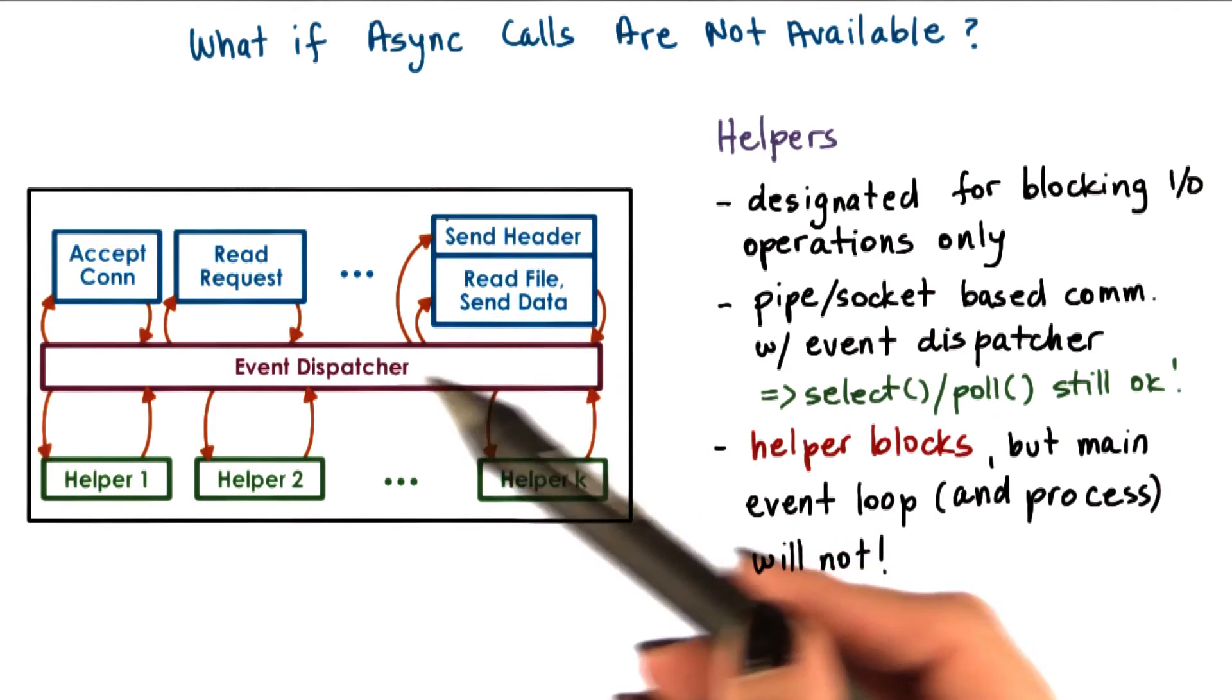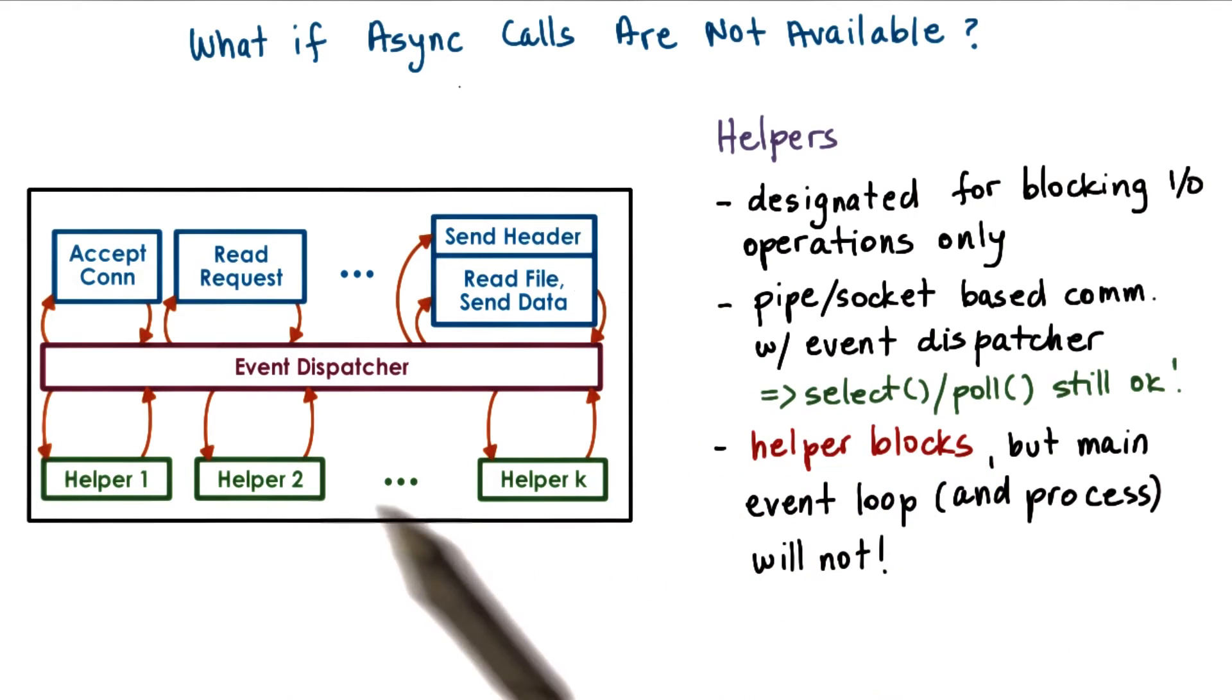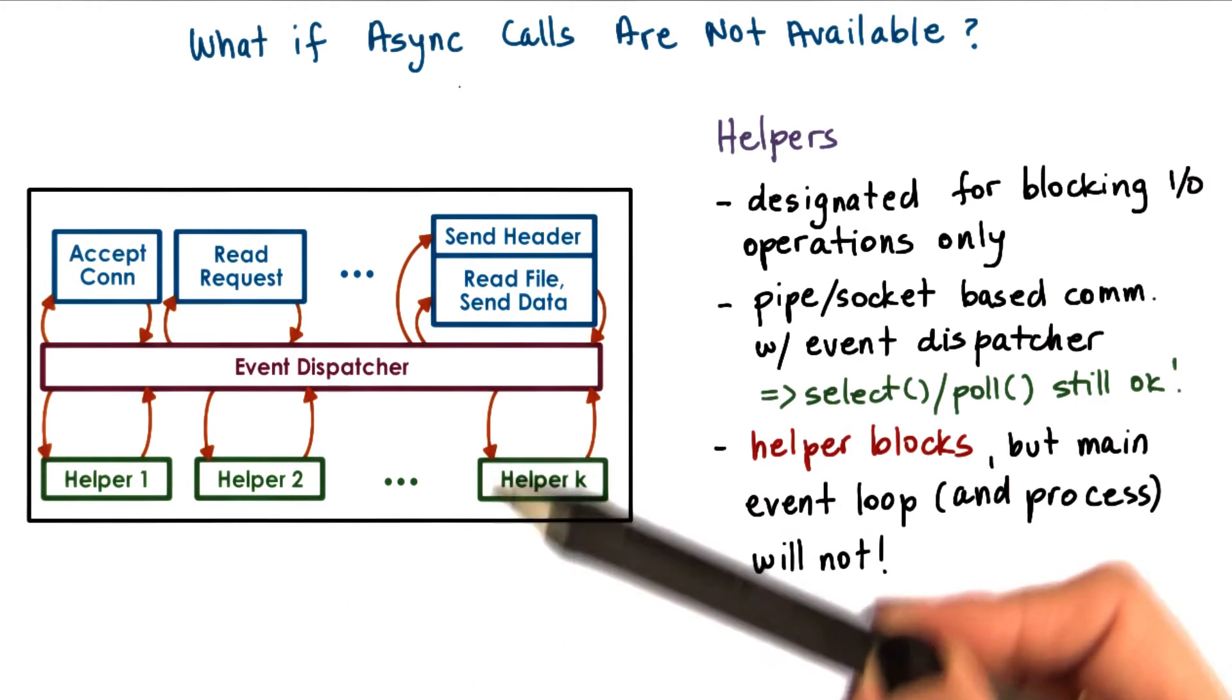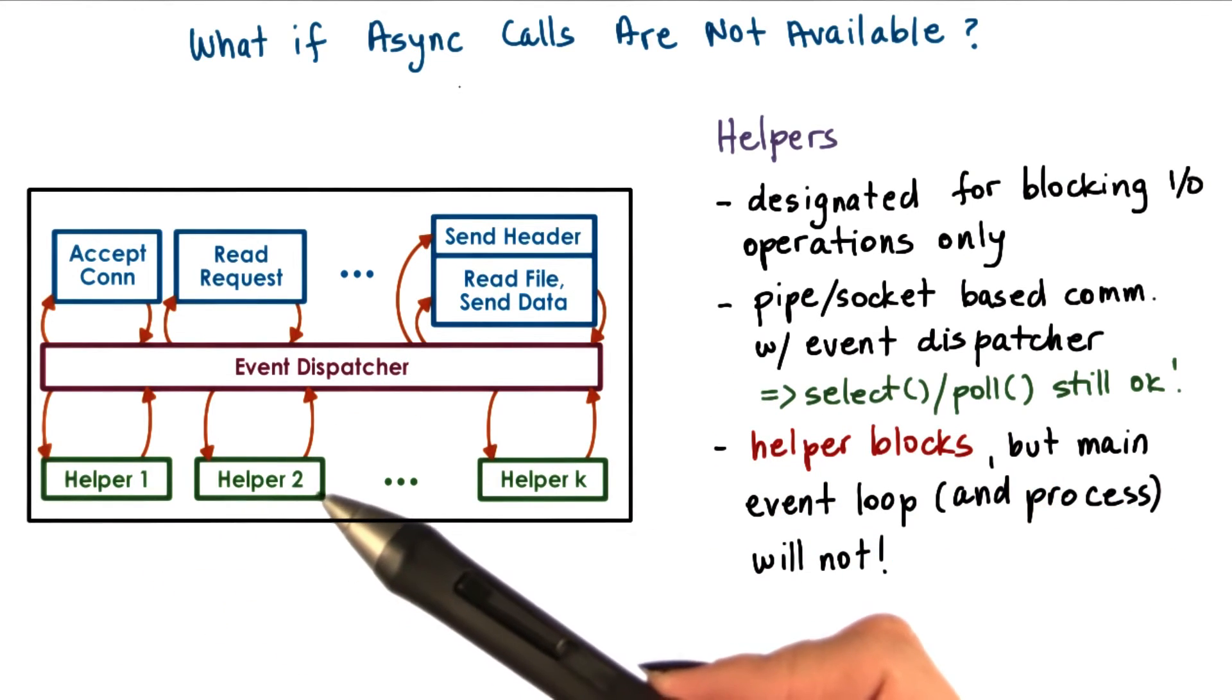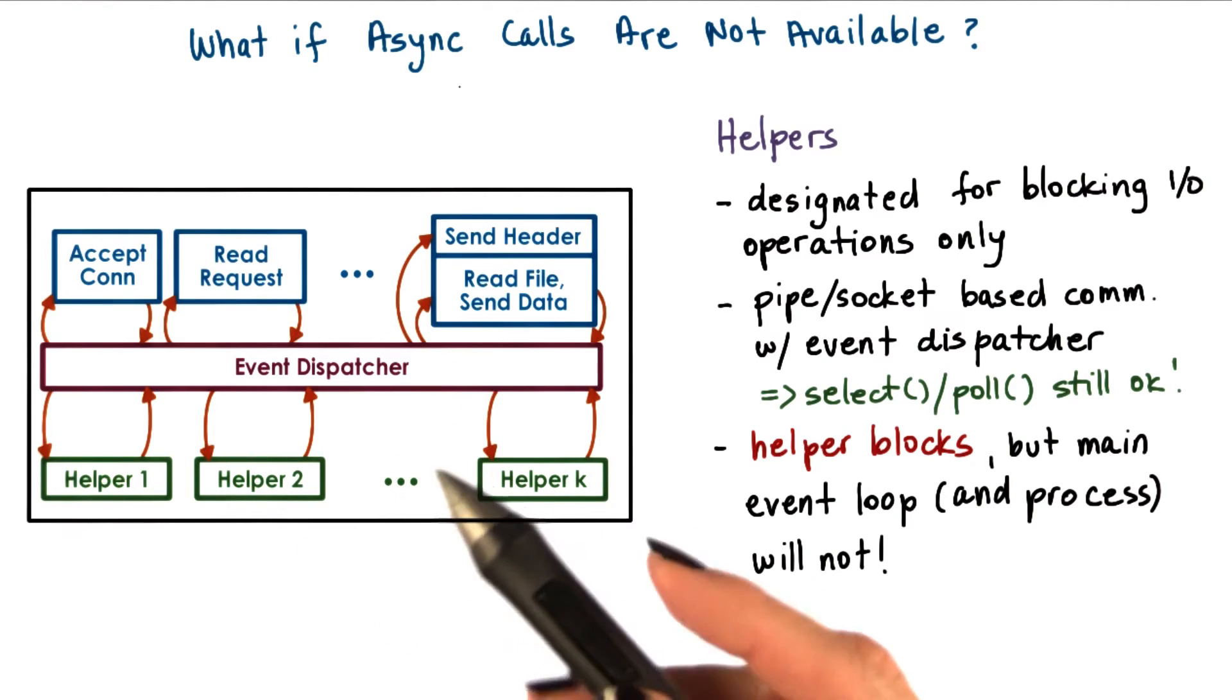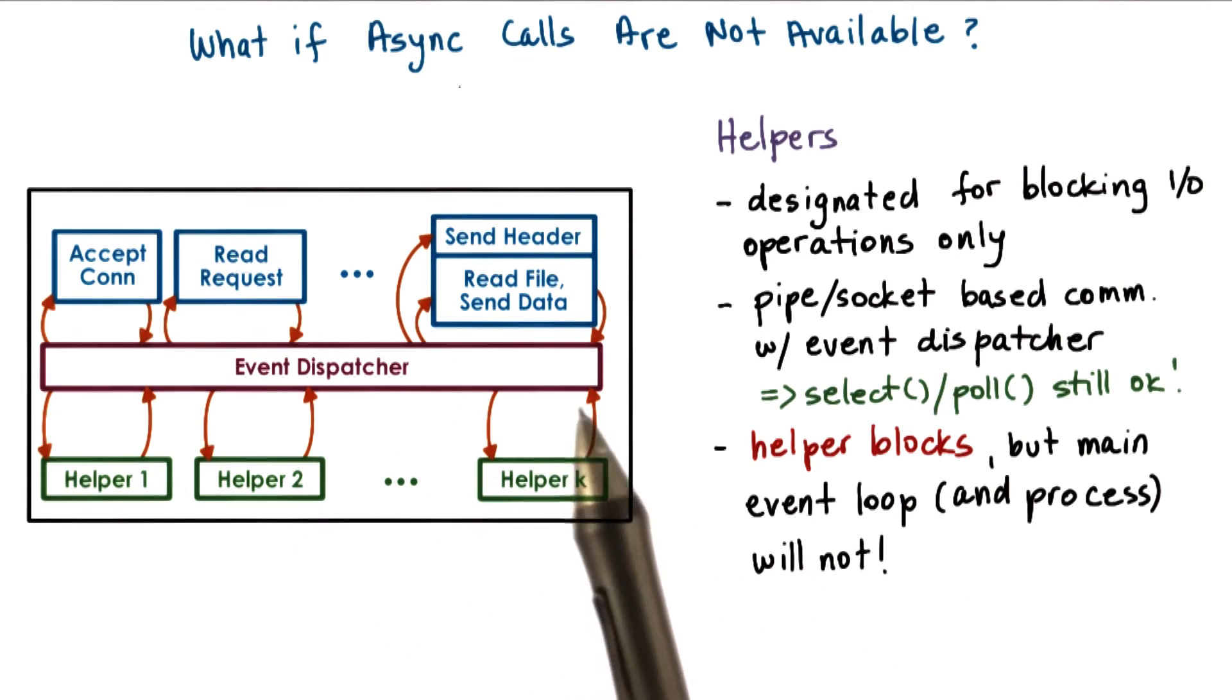So this way, although we don't have asynchronous IO calls, through the use of helpers, we achieve the same kind of behavior as if we had asynchronous calls. At the time of the writing of the paper, another limitation was that not all kernels were multithreaded.